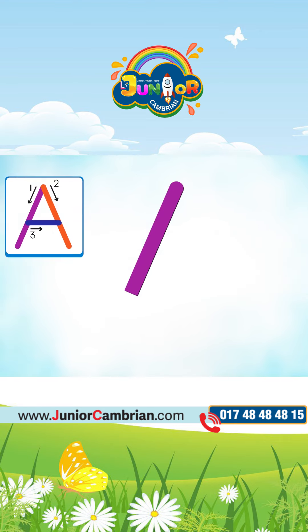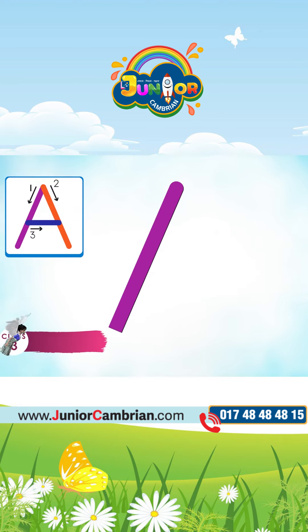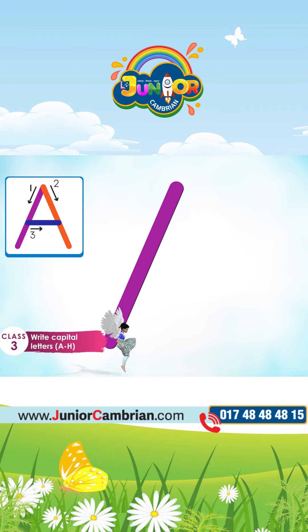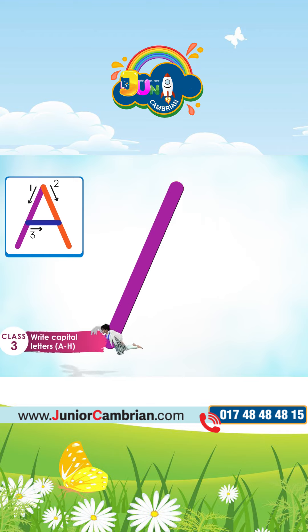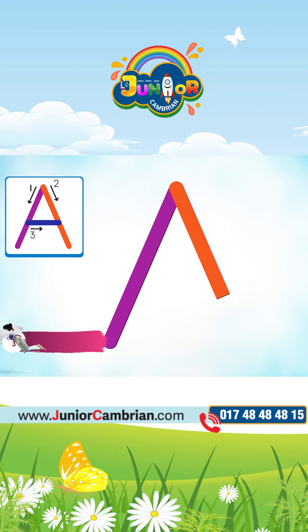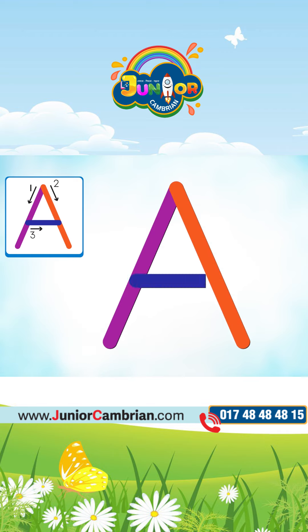We will draw a slanting line from the top to bottom and then another slanting line from top to bottom, and then a slipping line. This is capital A.